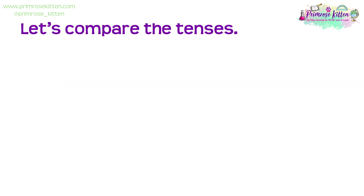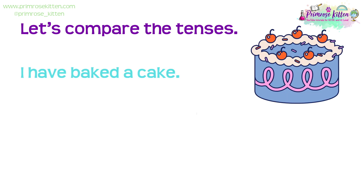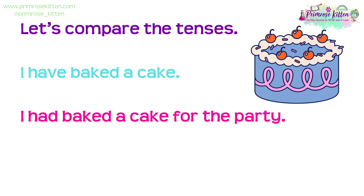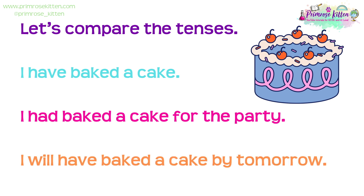Let's compare the tenses. The present perfect: 'I have baked a cake' — it started in the past but is relevant now. The past perfect: 'I had baked a cake for the party' — it was completed before another past action. And the future perfect: 'I will have baked a cake by tomorrow' — something that will be completed before a future point. Notice how each tense focuses on the completion of an action at different times.